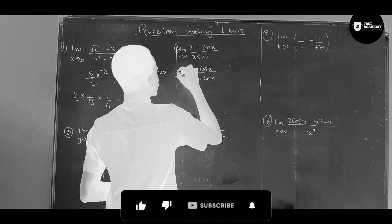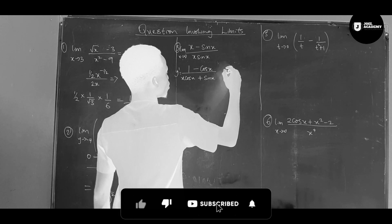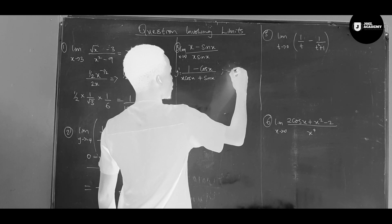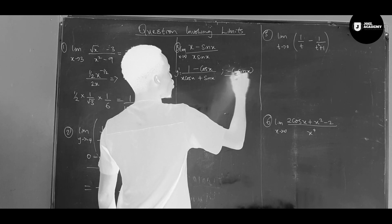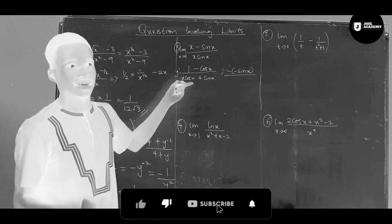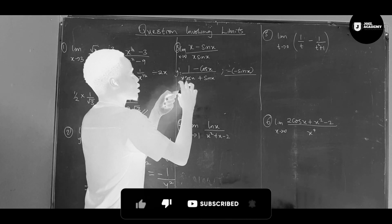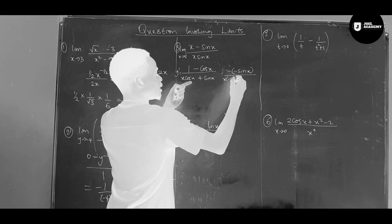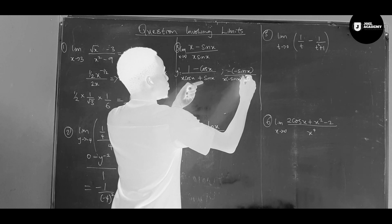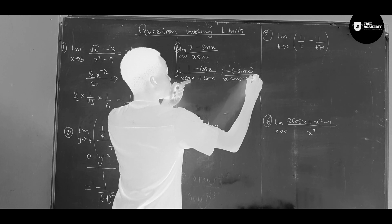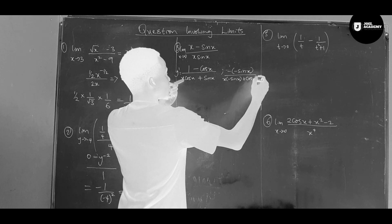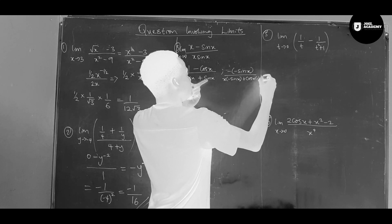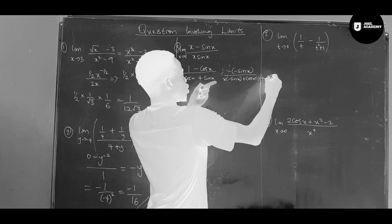So differentiating again. For the numerator: differentiate one, which is zero, minus differentiate cos x, which gives minus sin x. For the denominator, we use the product rule again: keep x constant, differentiate cos x giving minus sin x, plus keep cos x constant, differentiate x giving one, plus differentiate sin x giving cos x.